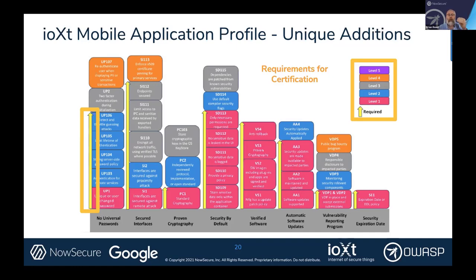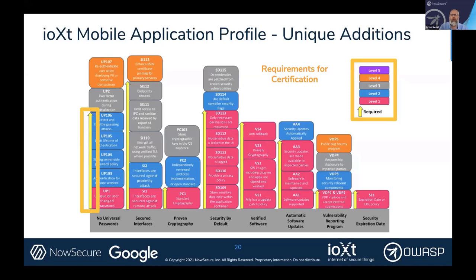We can walk across this from a password level through cryptography, security by default, verified software, automatic software updates, vulnerability reporting, and security expiration. There are varying levels of requirements within each of these — getting to minimum requirements that are predictable and consistent for the audience.